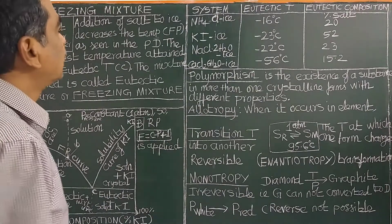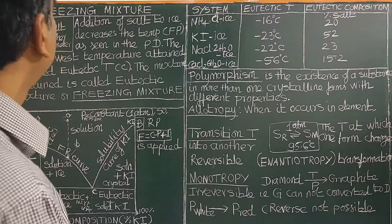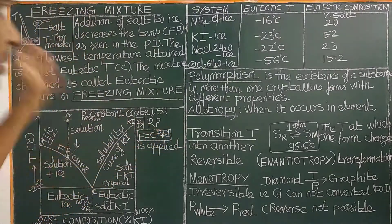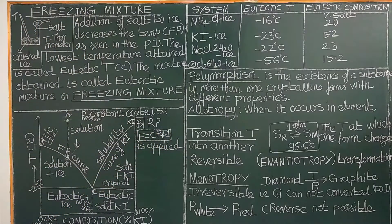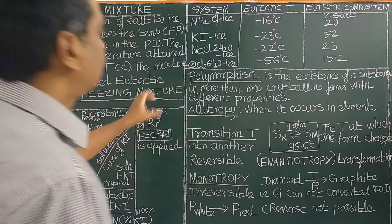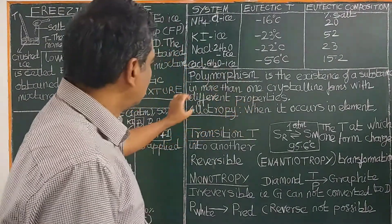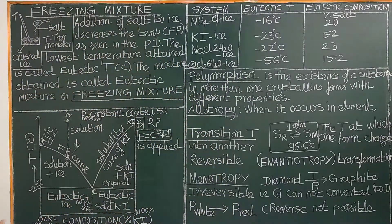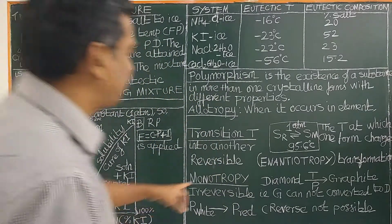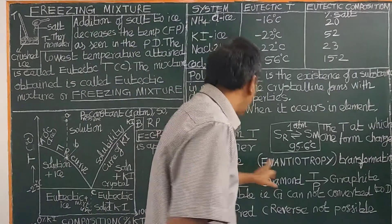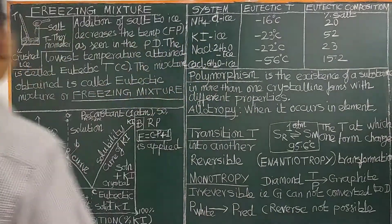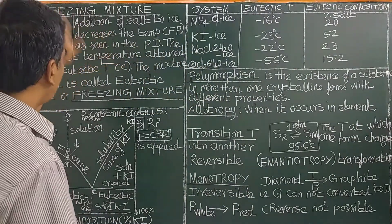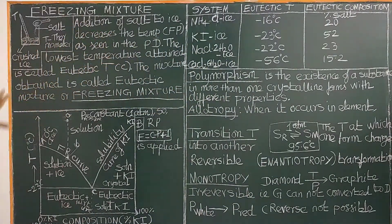Good morning. Today we will see what is called a freezing mixture, polymorphism, transition temperature, and the differences between enantiotropy and monotropy. We first see freezing mixture — what is called freezing mixture.